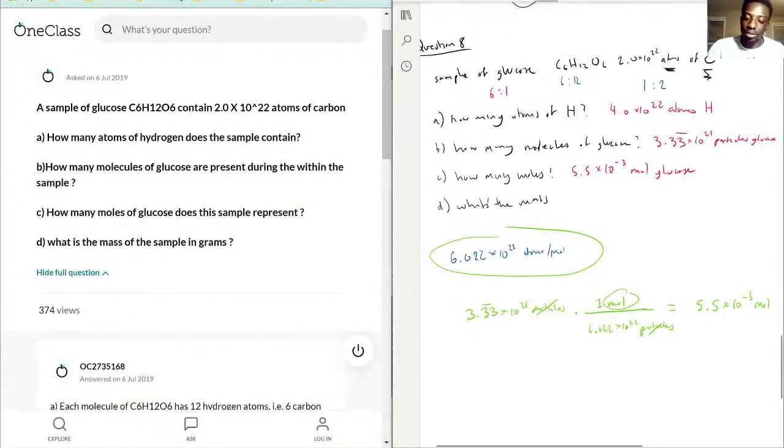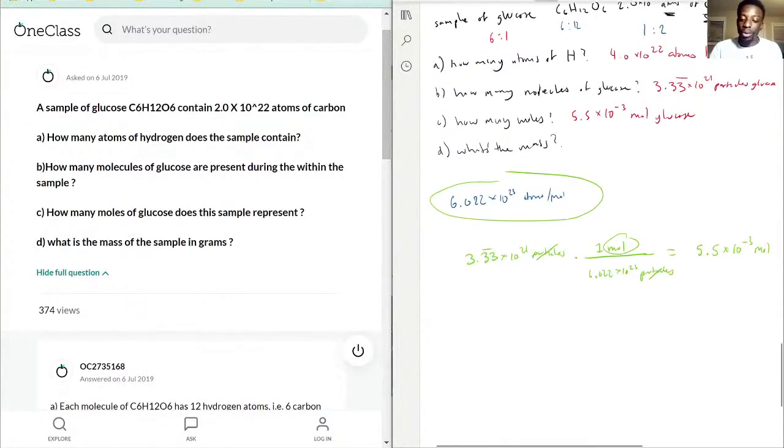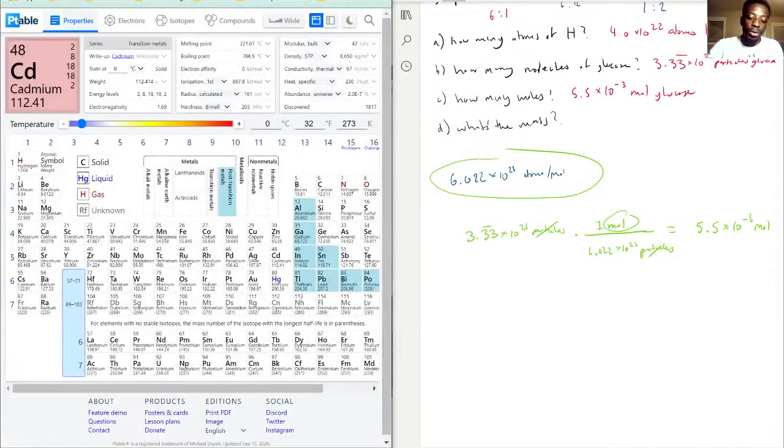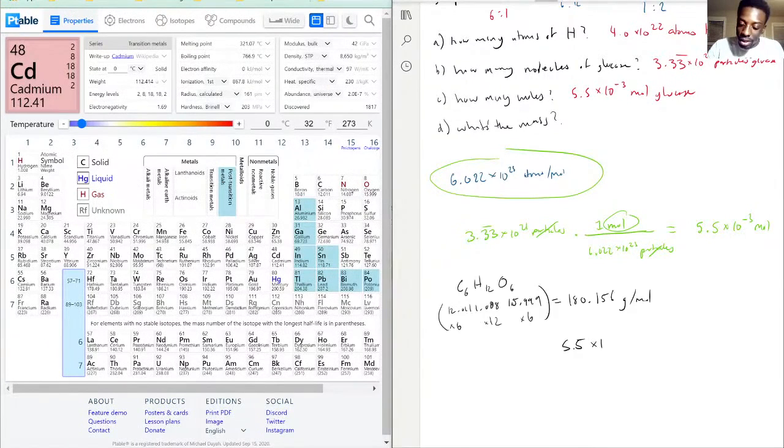So what is the mass of this amount? The way we find that out is relatively straightforward. We need the molar mass of glucose. If you refer to your periodic table, we have 5.5×10^-3 moles multiplied by 180.156 grams per mole glucose. You see here the moles indeed do cancel out, leaving you with just grams.